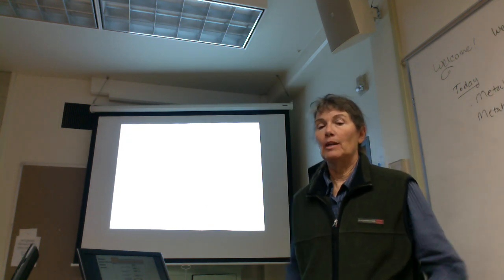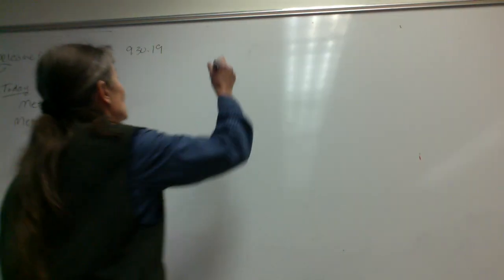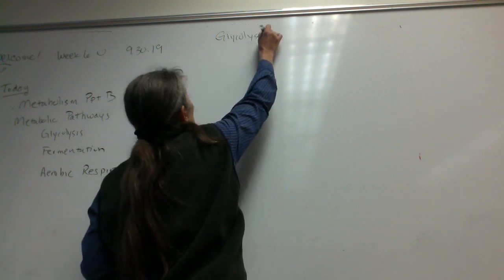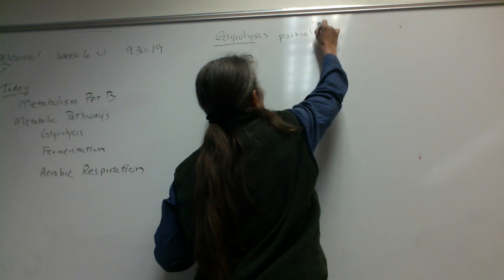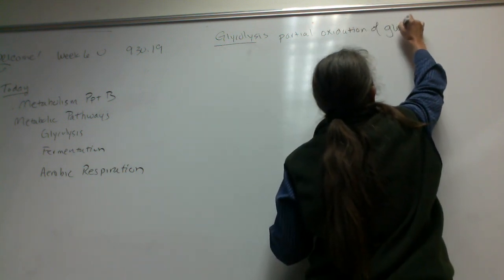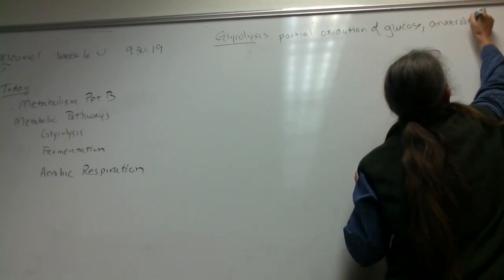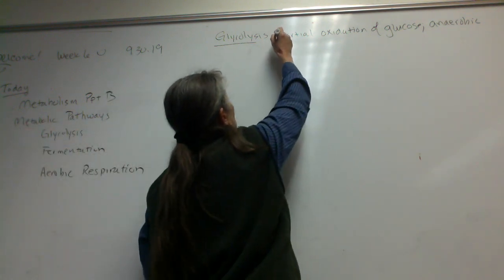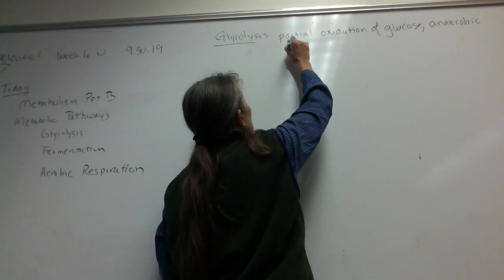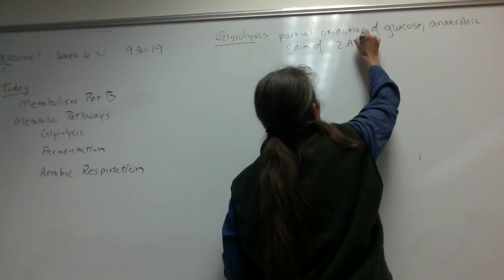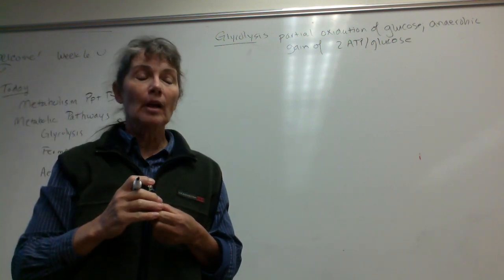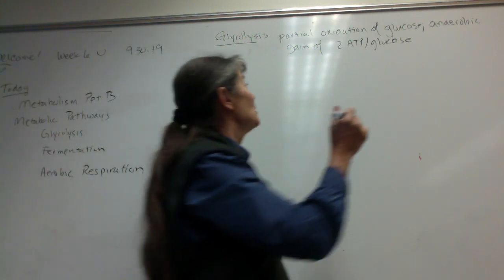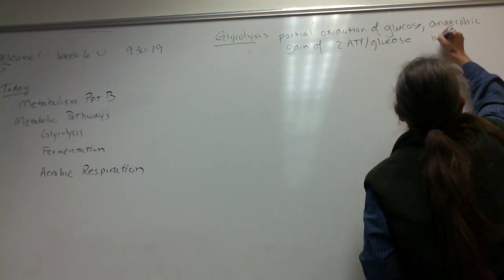I'll try to put the key points up on the board. So glycolysis is the partial oxidation of glucose, meaning we're not going to rip off all the high-energy electrons. It's an anaerobic process — no oxygen is required. Some important products: we're going to have a gain of 2 ATP per glucose by a process called substrate-level phosphorylation. We'll have something to compare it to when we get to aerobic respiration.